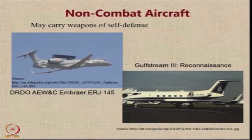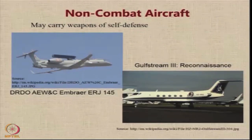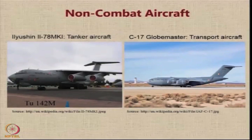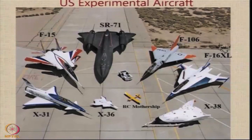There are also non-combat military aircraft; some may carry weapons for self-defense but generally do not. For example, aircraft can be used for reconnaissance missions, such as the Gulfstream 3. We may also use aircraft for airborne early warning and control — Embraer has modified its ERJ-145 business jet into an AEW&C aircraft that DRDO is planning to procure. Troop transport and equipment transportation are also roles, with the Globemaster and IL-78 serving as tanker or transport aircraft. A collection of various experimental aircraft operated by the US DoD also exists in this space.